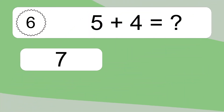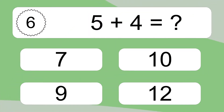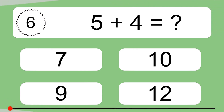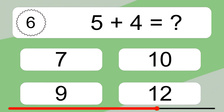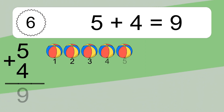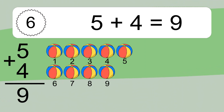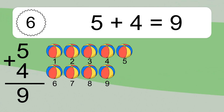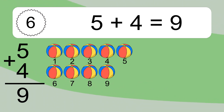5 plus 4 equals what? 5 plus 4 equals 9. Let's count it: 1, 2, 3, 4, 5, 6, 7, 8, 9.